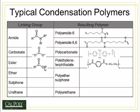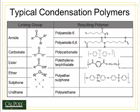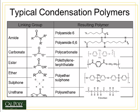An ester group involves carbon double-bonded to oxygen and bonded to another oxygen, which is then bonded to a second radical group. Polyethylene terephthalate contains two ester groups. Ethers involve an oxygen with two radical groups bonded to either side. In polyether sulfone, we see two ether oxygen bonds, and also a sulfone group, where two radicals are bonded to a sulfur atom plus two oxygens double-bonded to the sulfur.